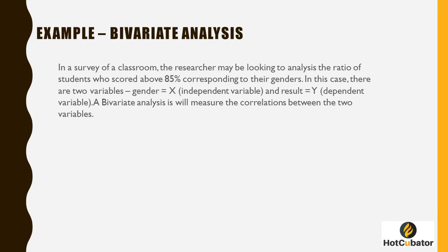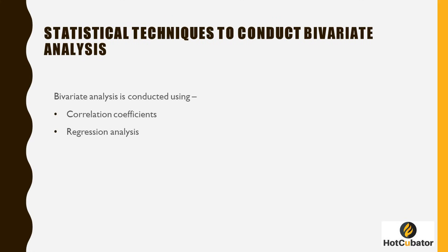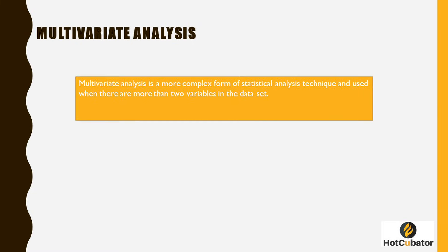A bivariate analysis measures the correlation between the two variables. Popular statistical techniques used include correlation coefficients and regression analysis — such as linear regression or simple regression — along with a range of other regression styles.